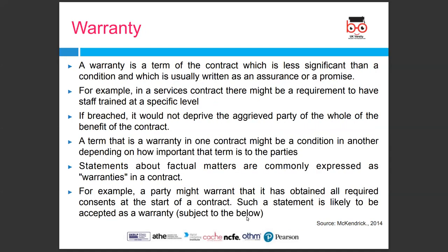A warranty is a term of the contract which is less significant than a condition and is usually written as an assurance or a promise. For example, in a services contract, there might be a requirement to have staff trained at a specific level. If breached, it would deprive the aggrieved party of the whole benefit of the contract. A term that is a warranty in one contract might be a condition in another, depending on how important that term is to the parties. Statements about factual matters are commonly expressed as warranties — for example, a party might warrant that it has obtained all required consents at the start of the contract.